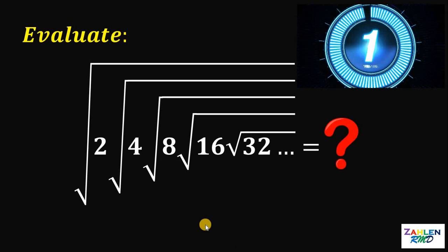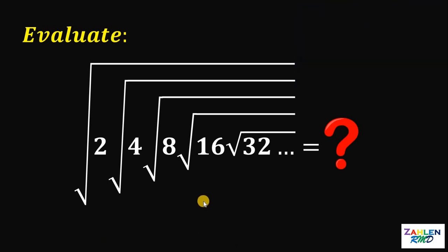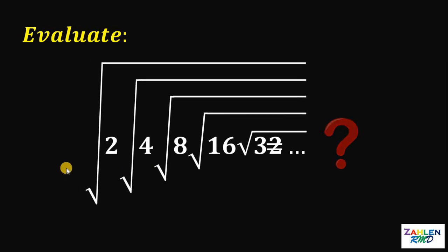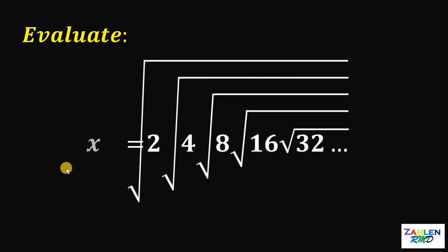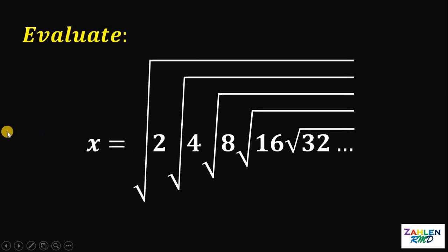Time's up. Now let's answer this question together. First thing to do is to let x be equal to this expression. So we have x equals square root of 2 times square root of 4 times square root of 8 times square root of 16 times square root of 32, and so on and so forth.